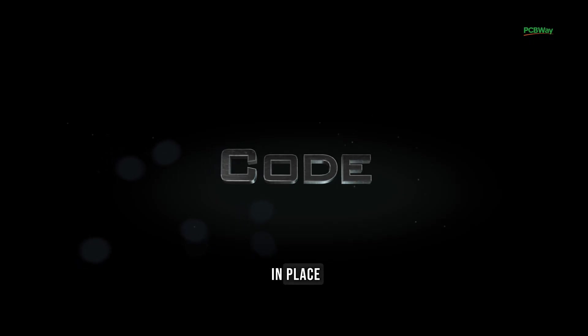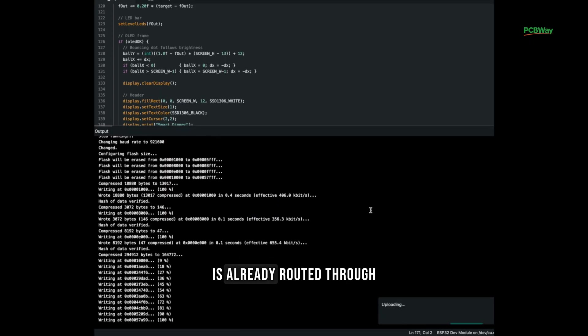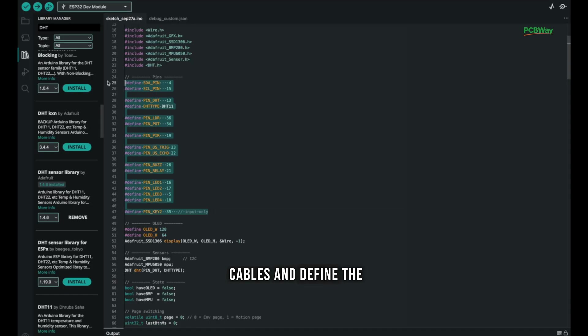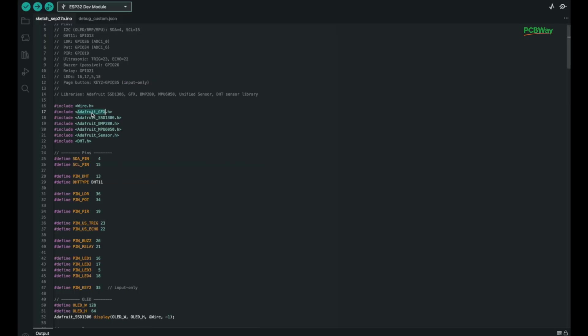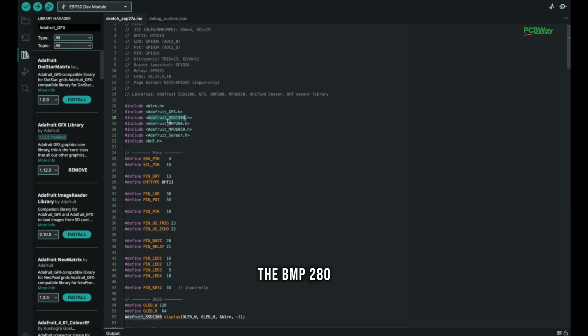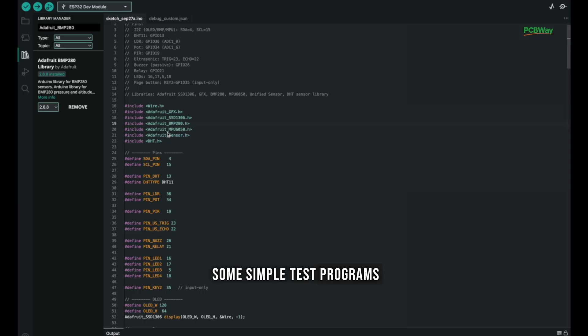With all the hardware in place, the next step is the code. Since everything is already routed through the PCB headers, all you have to do is connect the sensors with a few jumper cables and define the right pins in Arduino IDE. You install the libraries for the OLED display, the BMP280, and the MPU6050 gyro. Then you can write some simple test programs.